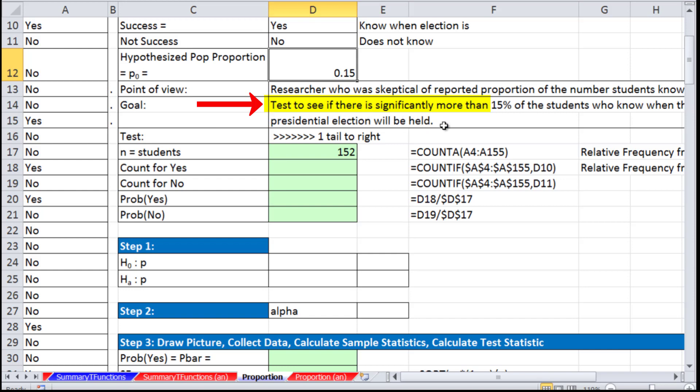Our goal is to test if there's significantly more than 15% of the students who knew when the presidential election would be held. Significance means we have to pass that hurdle before we reject the null and accept the alternative. The more than 15% phrasing helps us set up the null and alternative hypotheses.